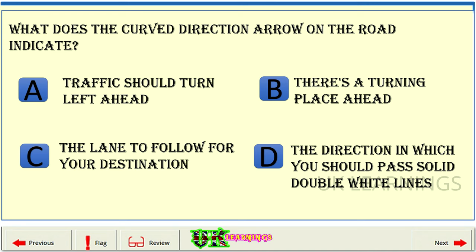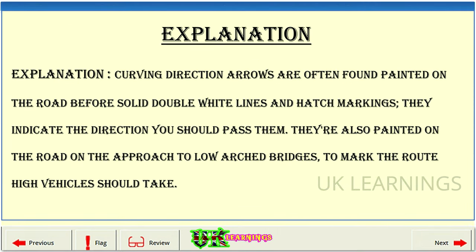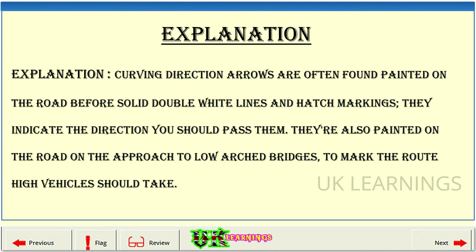What does the curved direction arrow on the road indicate? A: Traffic should turn left ahead. B: There's a turning place ahead. C: The lane to follow for your destination. D: The direction in which you should pass solid double white lines. The correct answer is D. Explanation. Curving direction arrows are often found painted on the road before solid double white lines and hatch markings. They indicate the direction you should pass them. They're also painted on the road on the approach to low arched bridges, to mark the route high vehicles should take.